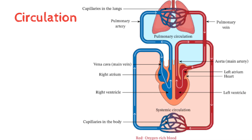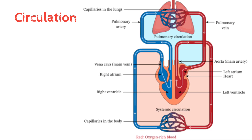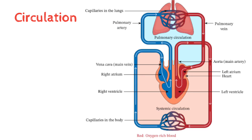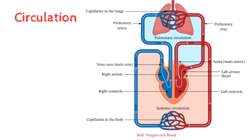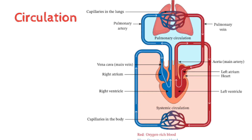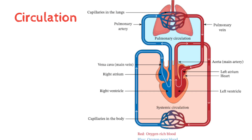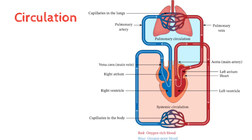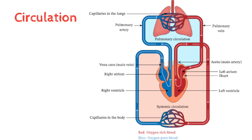In the lungs, there is oxygenated blood on the left side of the atrium. On the left side of the ventricle, oxygenated blood is pumped to all body parts. Deoxygenated blood then enters the right side of the atrium. That is how systemic circulation and pulmonary circulation take place.